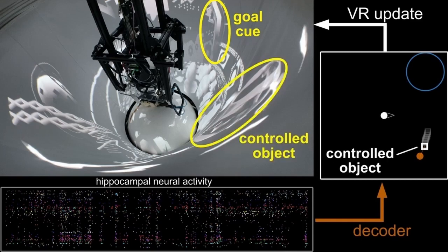In the JEDI task, the animal is always fixed at the center of the arena and needs to activate neural representations of remote locations to control where the object goes.